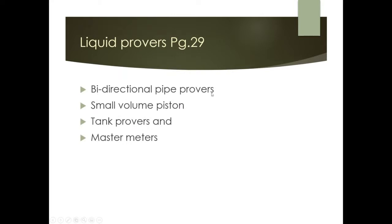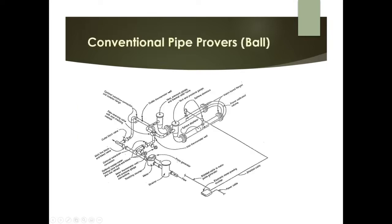Liquid prover types include: bi-directional pipe provers (ball provers), small volume piston provers, tank provers, and master meters. The conventional pipe prover — also called a ball prover — is a large piece of equipment using 12-, 16-, or 18-inch pipe. This is the type shown in the large facility image at the start of this section.